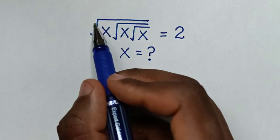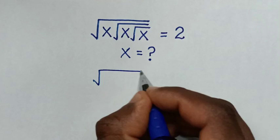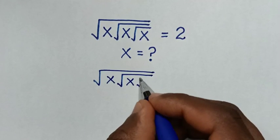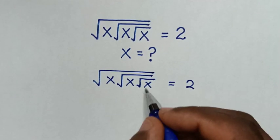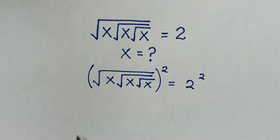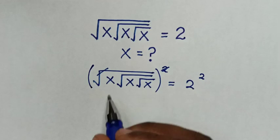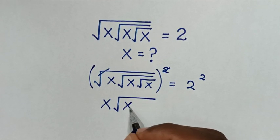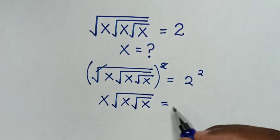So first, to cancel this first square root, we will multiply by squaring both sides. From the equation — square root of x, square root of x, square root of x equals 2 — we square both sides, so this square root will cancel with this square. It will become x times square root of x times square root of x is equal to 2 squared.